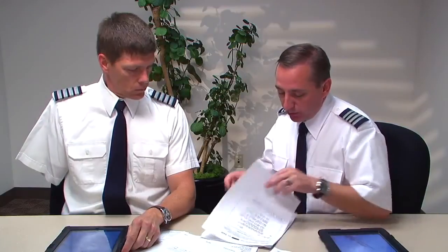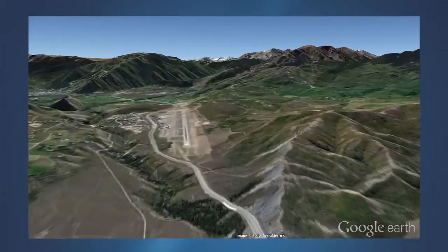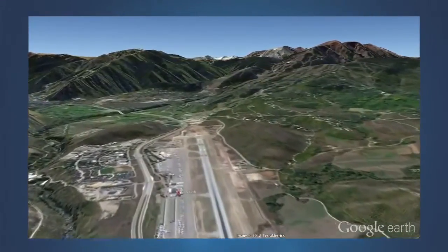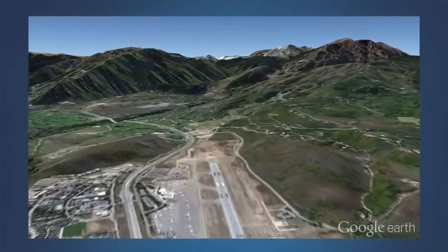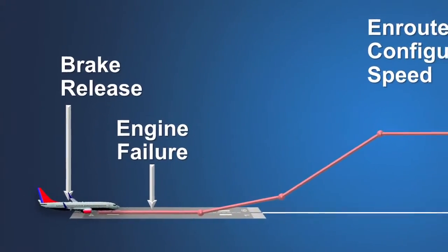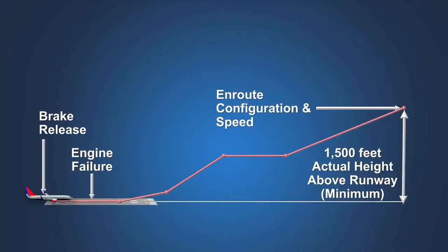This flight crew has accomplished a thorough review of the performance challenges affecting their planned departure from Aspen. Now let's take a moment to examine the challenge of takeoff obstacle clearance and avoidance planning when departing Aspen. A review of the certification rules regarding the takeoff path is a good place to begin. The certification rules define a takeoff path or vertical profile used to establish both the takeoff climb limit weight and the takeoff flight path for determining the takeoff obstacle limit weight. The takeoff path is divided into a series of segments.